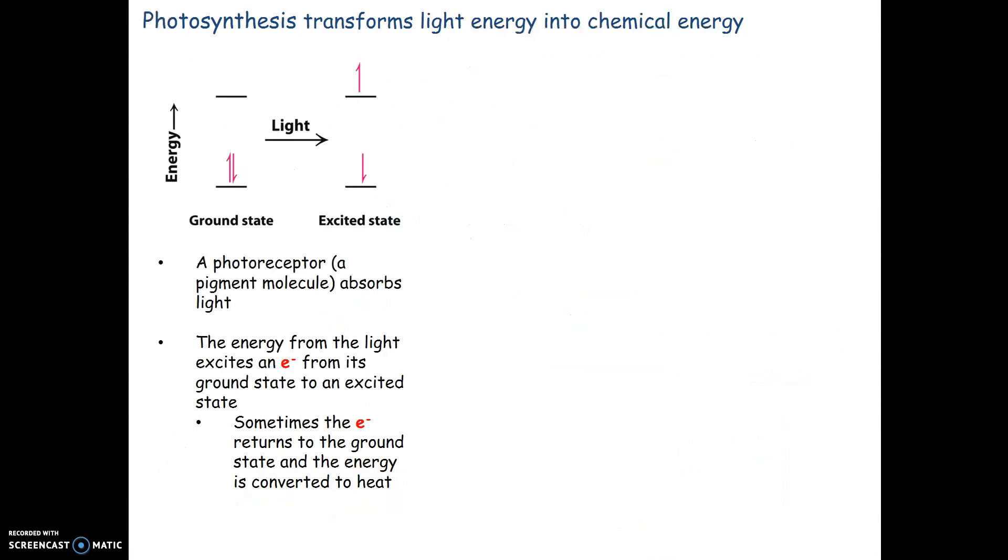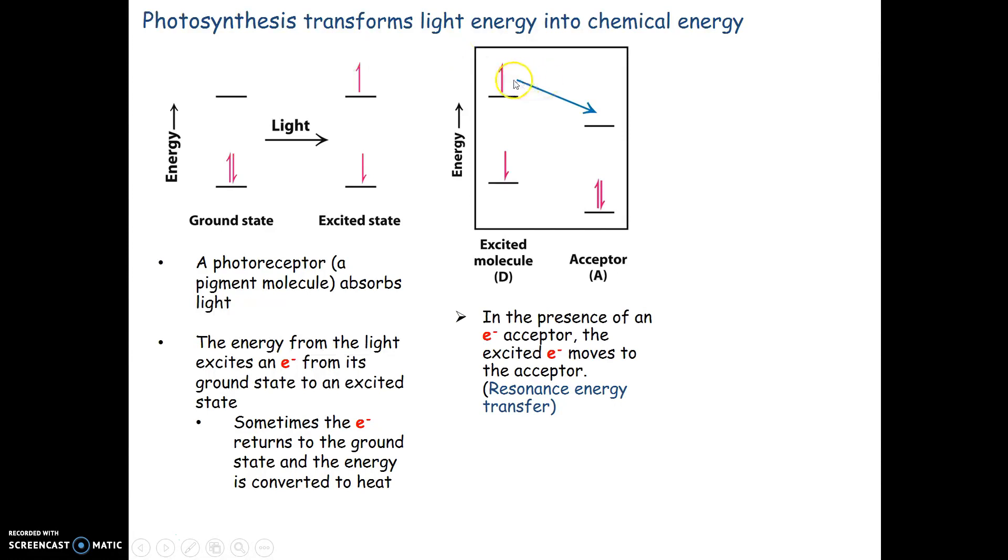How do we get light energy into chemical energy? We have light coming in. Photoreceptor molecules like chlorophyll absorb this light. Light is a form of energy. Our ground state electrons receive light energy, which excites one of those electrons into its excited state.